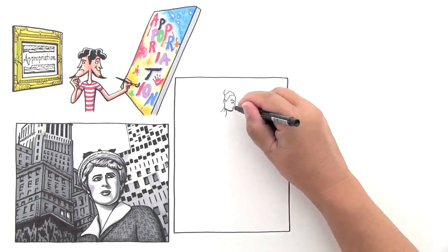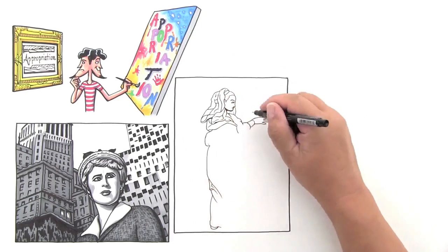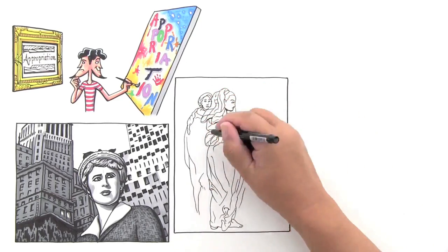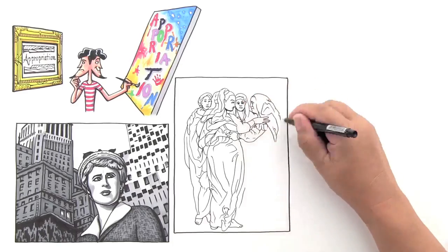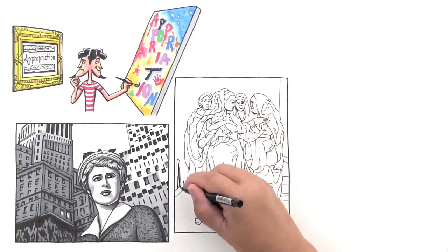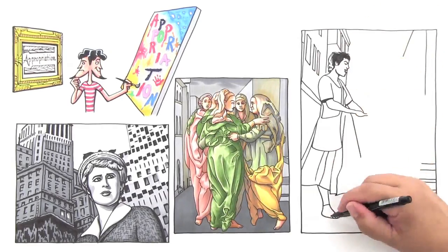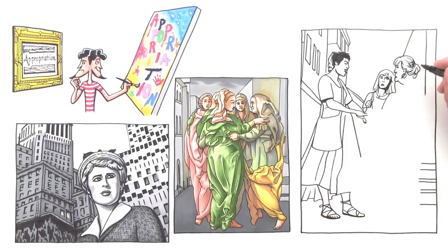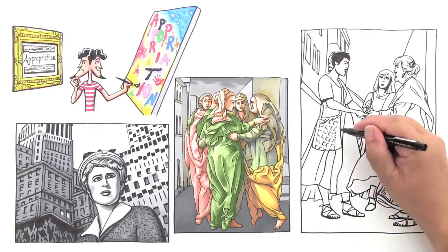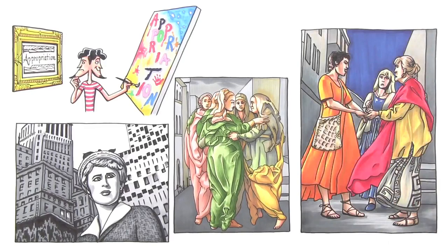Bill Viola was driving by a street corner and saw three women talking with their skirts blowing in the wind. It reminded him of a painting by the Italian mannerist Pontormo entitled Visitation. He decided to do his own recreation of the painting as a video and called it The Greeting. The staging is similar, but the women are obviously contemporary.